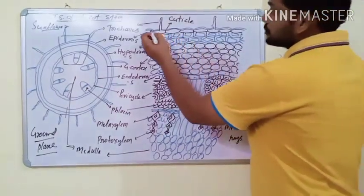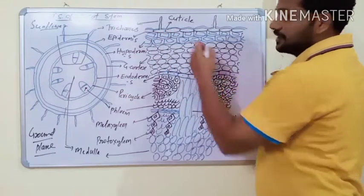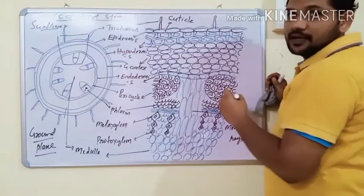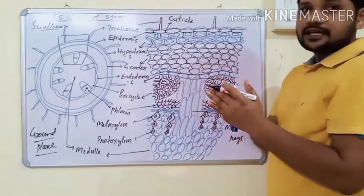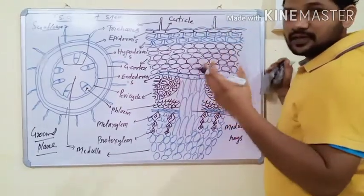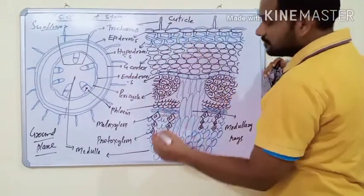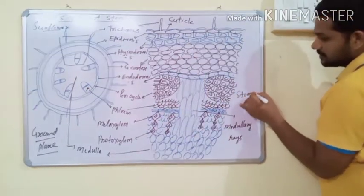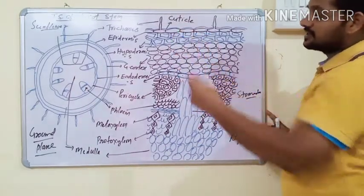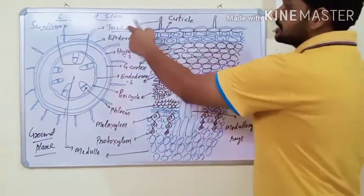The outermost tissue is the epidermis. It is the outermost protective layer and is unilayer. The epidermis is made up of elongated and compactly arranged parenchymatous cells with narrow cytoplasm and a centrally located vacuole. In some cases, especially in young stems, the epidermis also possesses stomata, which help in the exchange of gases.